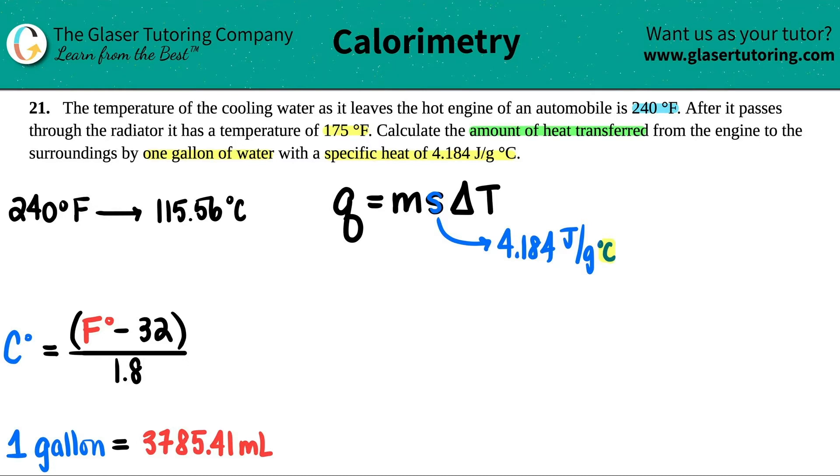And now let's do the same for the 175. So I have 175 degrees Fahrenheit. Let's see what that is in Celsius. Same formula: 175 minus 32 divided by 1.8. I get 79.44.